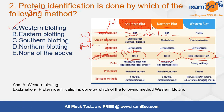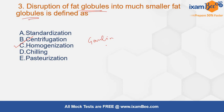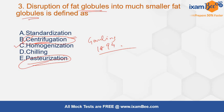The next question is: disruption of fat globules into smaller fat globules is defined as which process? Options are standardization, centrifugation, homogenization, or chilling and pasteurization. The correct answer is homogenization. Homogenization is the process by which fat globules are disrupted into smaller fat globules. This was discovered by Gaulin in the year 1899. Centrifugation is a separating process where particles are separated based on their density. Pasteurization is mainly done to kill microbes, achieving 99.9% kill of harmful microbes, and it also improves shelf life, mainly in milk and milk products.